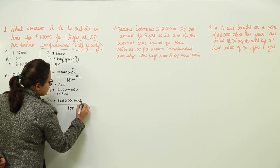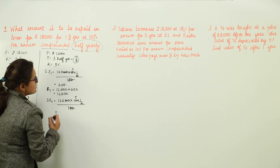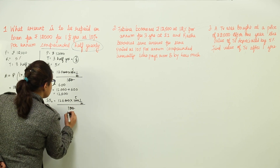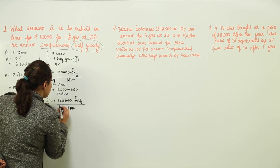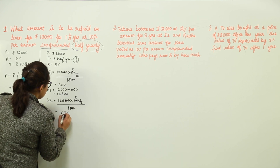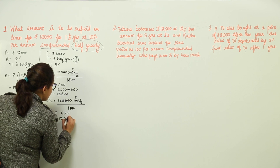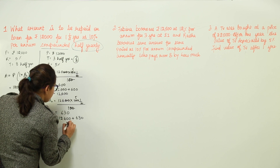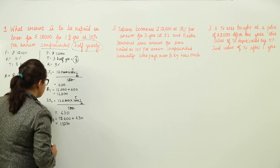For the second half year, simple interest = 12,600 × 10 × (1/2) / 100 = 630. Amount after second half year = 12,600 + 630 = 13,230.